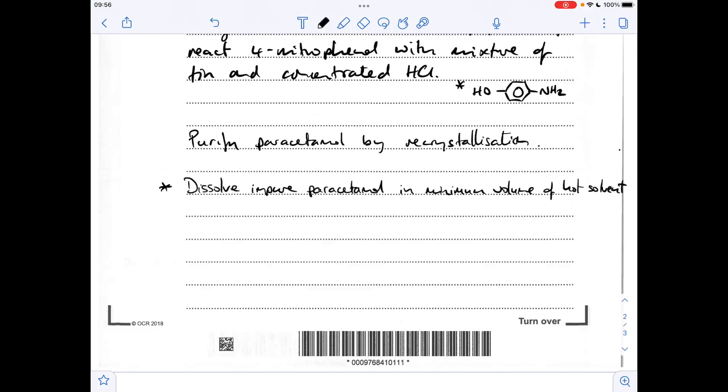Next thing we do is cool that mixture back down again so the crystals reform. And sometimes it's a good idea to scratch the side of the beaker with a glass rod and that helps the crystals to reform. Next thing we do is filter under reduced pressure or you could say filter using Buchner apparatus.